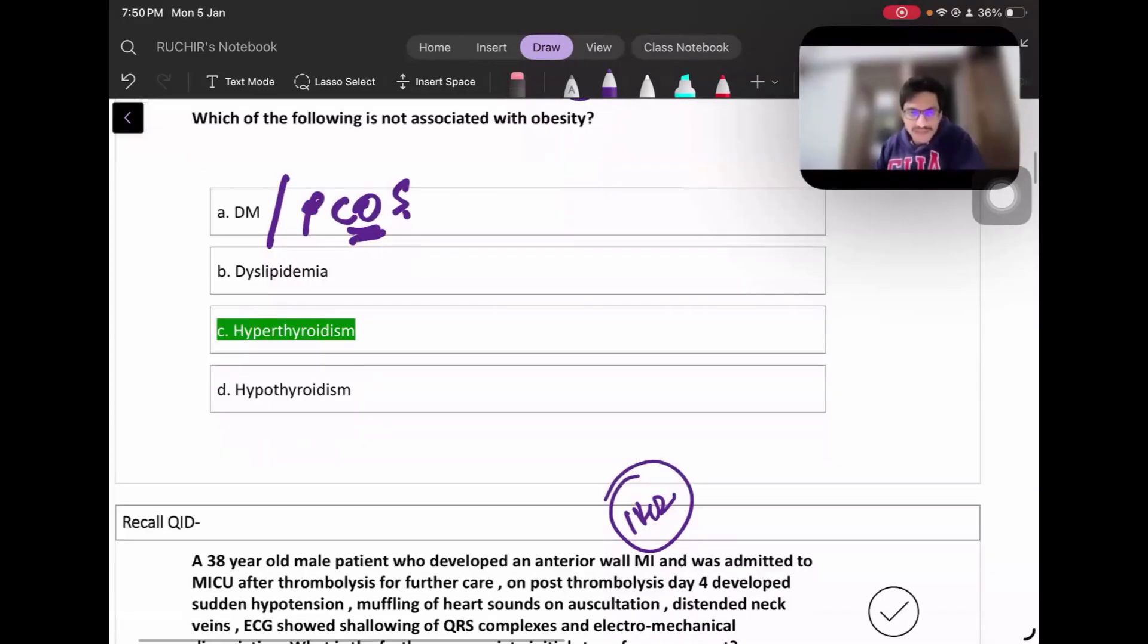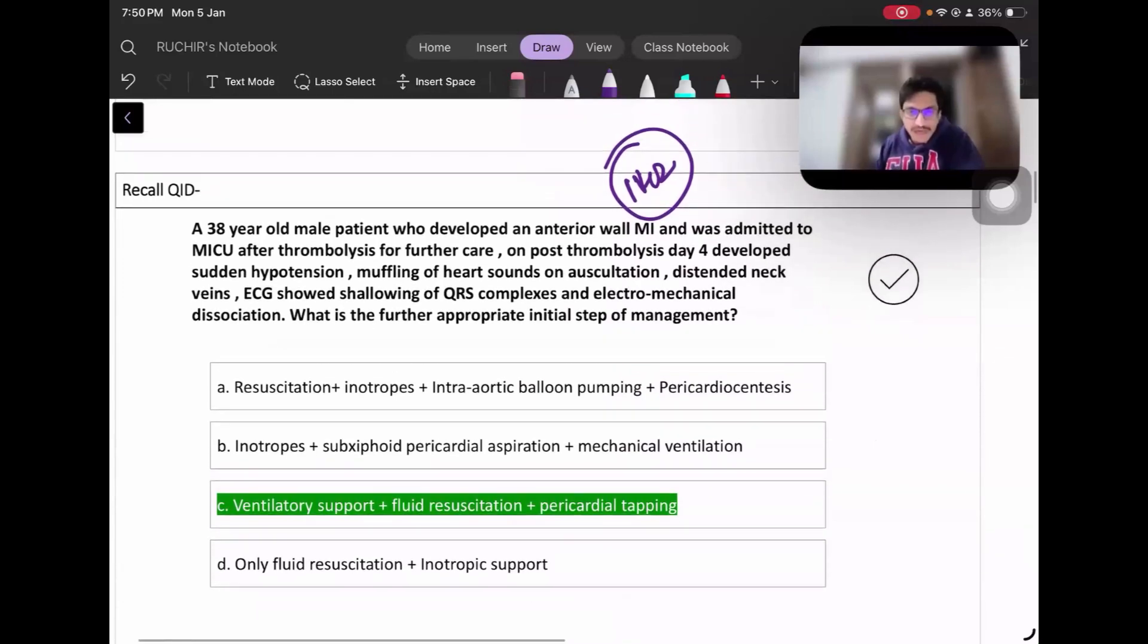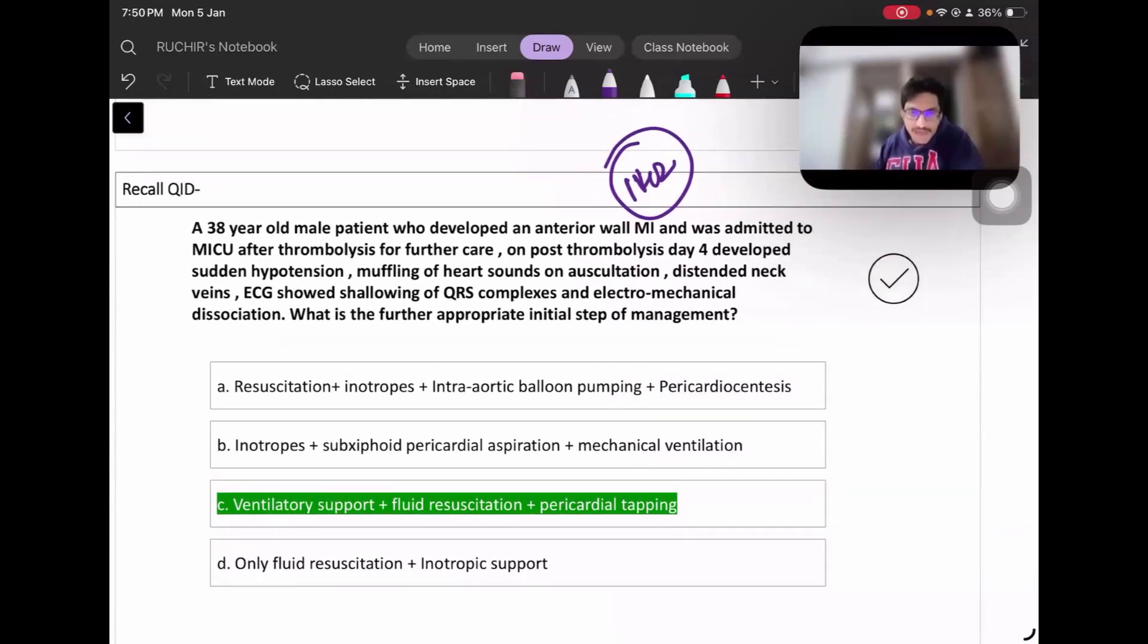This is about anterior wall MI with ventricular rupture, where you have post-thrombolysis sudden hypotension, muffling, and distended neck veins, which is a sign of cardiac tamponade.